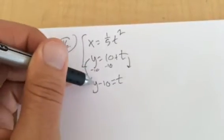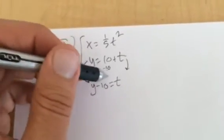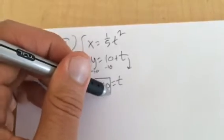These two equations are equivalent to each other. Say the same thing. So t is equal to y minus 10.